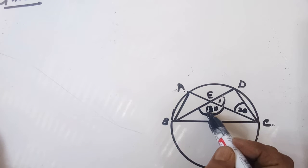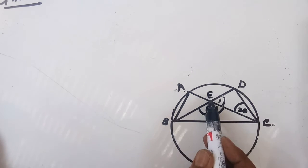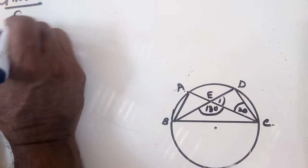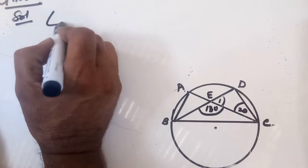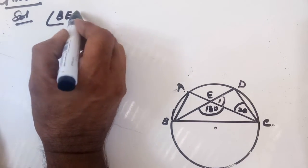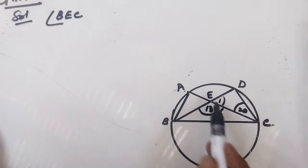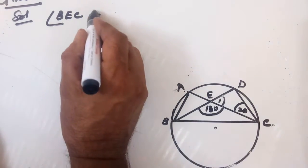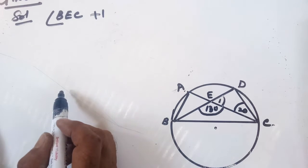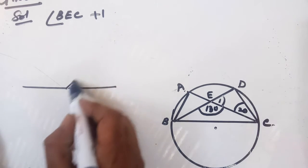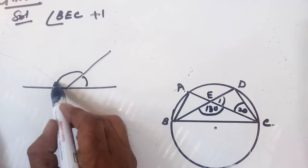Angle BEC is 130 degrees. Let's call the adjacent angle as angle 1.